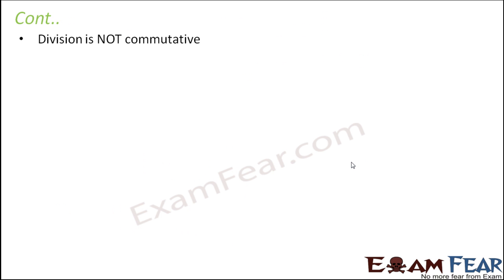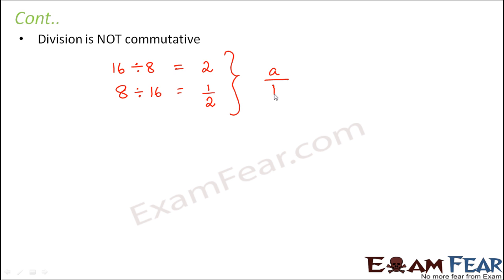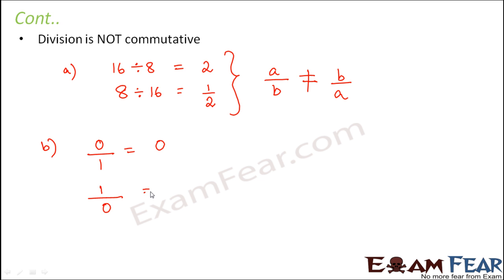What about division? Division is again not commutative. When you divide 16 by 8, you get 2. But when you divide 8 by 16, you get 1 by 2. So A divided by B is not equal to B divided by A, and therefore division is not commutative. For another example, 0 divided by 1 is 0, but when you divide 1 by 0, it is not defined. Overall, division is not commutative. So as far as the commutative property is concerned, addition and multiplication are commutative, while division and subtraction are not commutative.